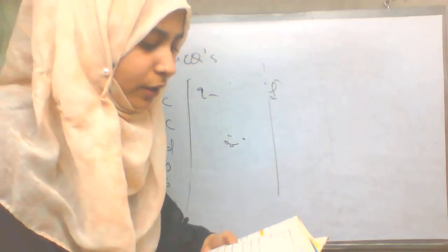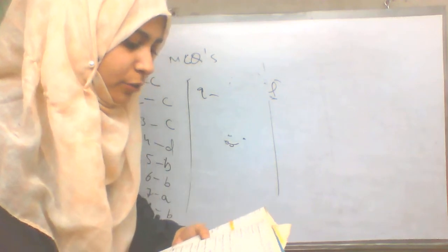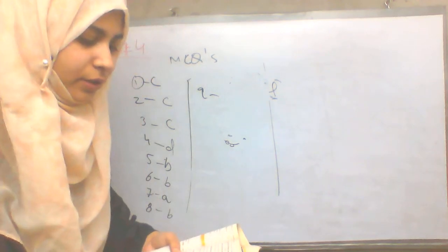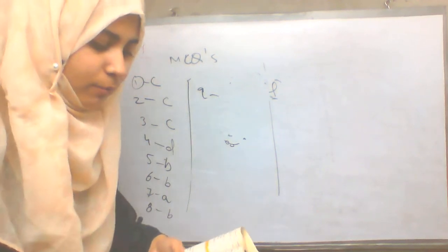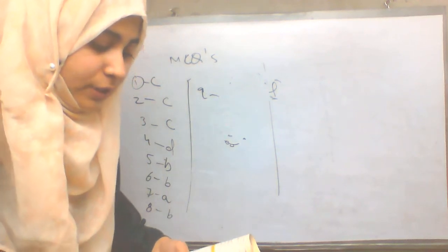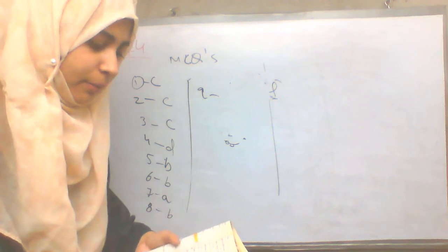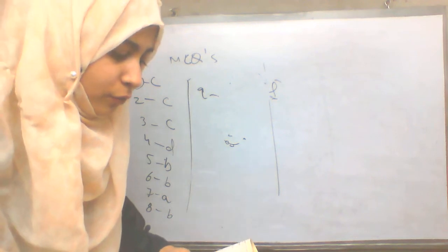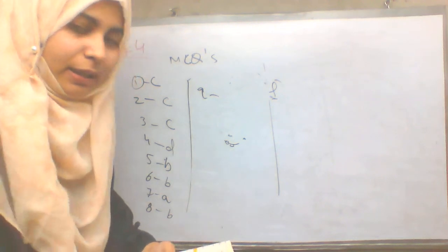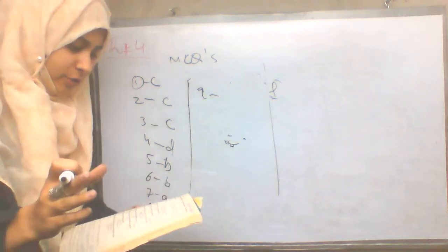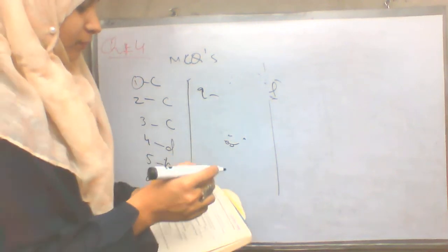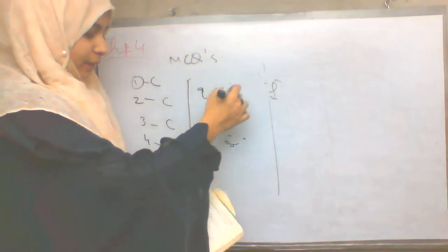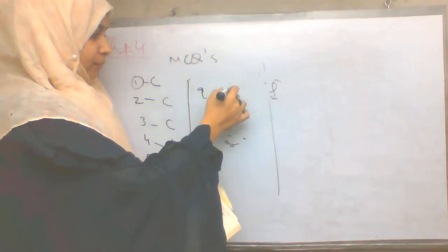Question 9: Which of the following compounds is not directional in its bonding? The answer is KBr. KBr does not have a particular direction in its bonding. So 9 is B.